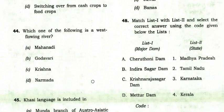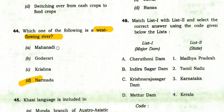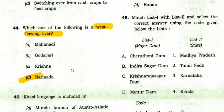Which is the best west-flowing river? The right answer is D: Narmada. Narmada is a west-flowing river, while Mahanadi, Godavari, and Krishna are east-flowing rivers.